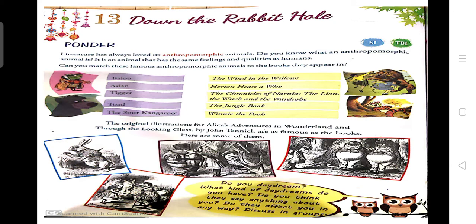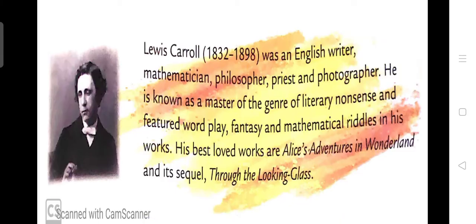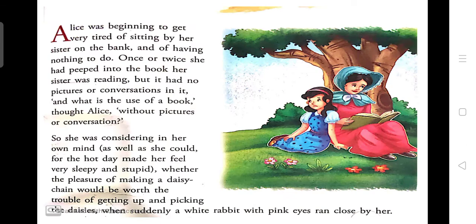Good morning students, welcome back. In today's video we will continue with chapter 13, 'Down the Rabbit Hole.' This video is part 2 of this chapter, written by Lewis Carroll. This chapter is about a seven-year-old girl, Alice. Alice was sitting with her sister and she was trying to see what her sister was reading.